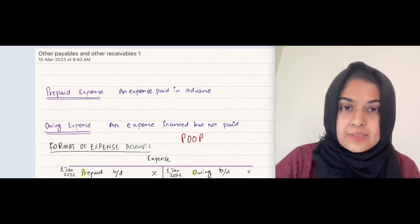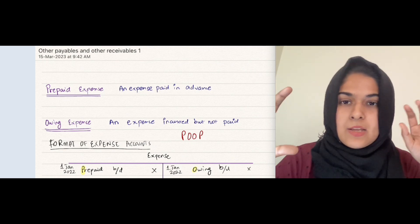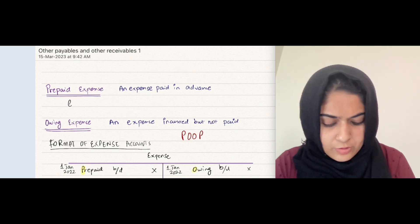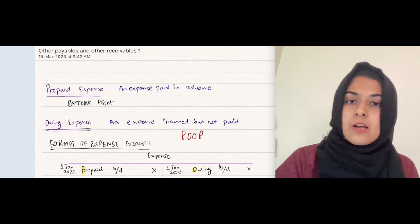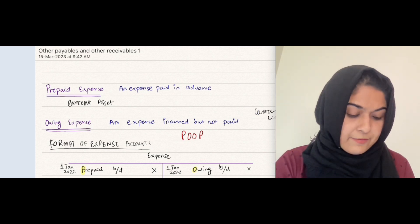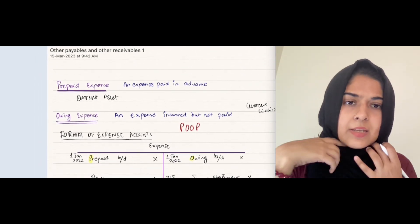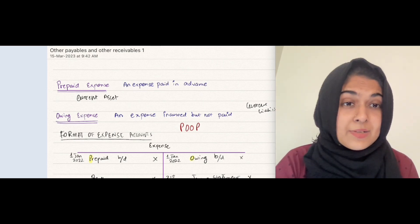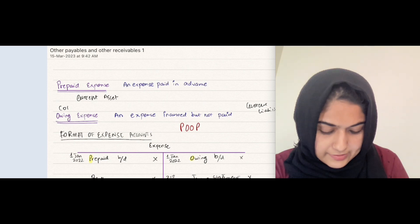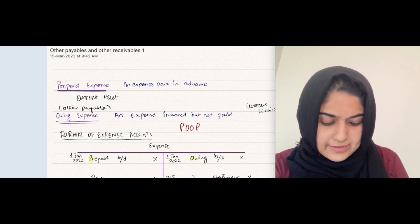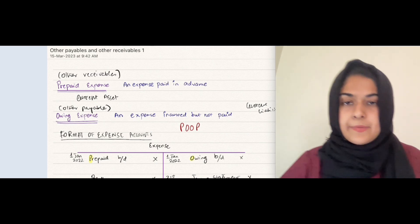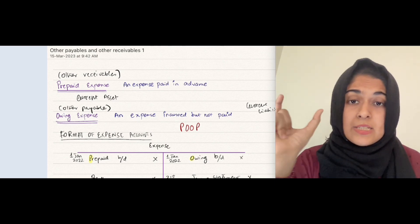In the last video, I discussed expenses - what is an owing expense and what is a prepaid expense. Prepaid expenses are current assets, and owing expenses are current liabilities. In accounting, CIE examiners and marking schemes use the terminology 'other payable' and 'other receivable.' An owing expense is also called other payable, and a prepaid expense is also called other receivable.